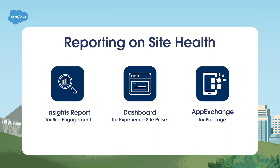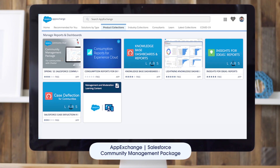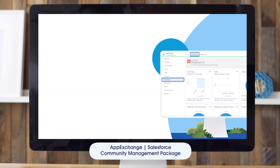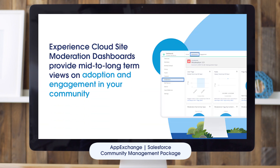Experience Cloud comes with built-in reporting and analytics to specifically help with moderating site activity and reporting on site health. We already covered the Experience Site Pulse at the top of the workspaces. For additional metrics, we highly recommend downloading the Salesforce Community Management Package from the AppExchange, which any internal user with the Download AppExchange Packages permission can do. This package gives community managers a starter set of dashboards and reports to keep tabs on activity and engagement directly in the Experience workspaces.